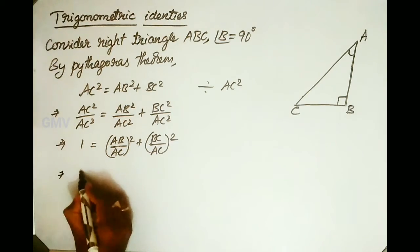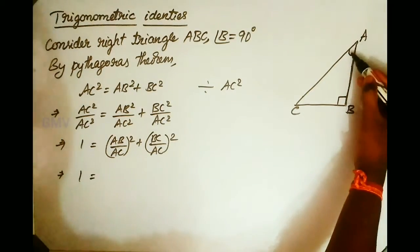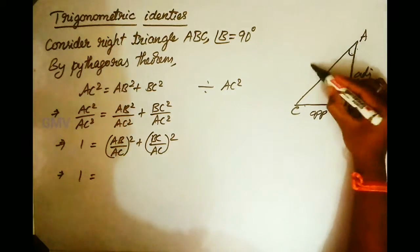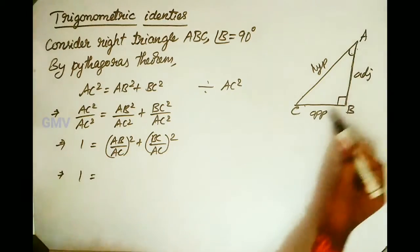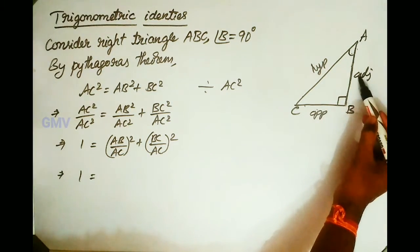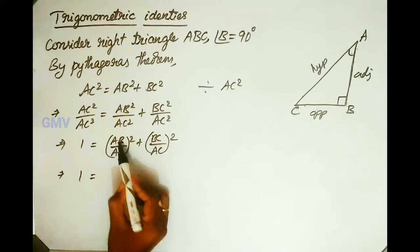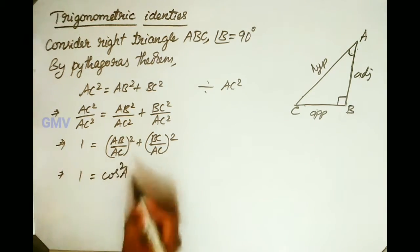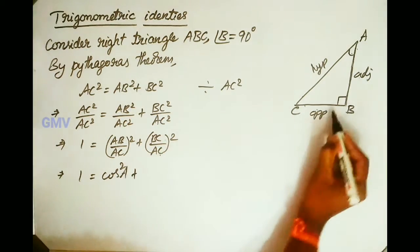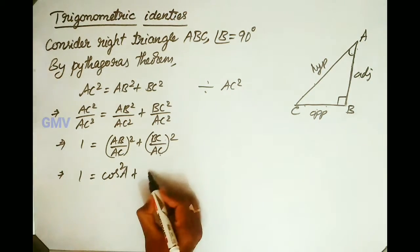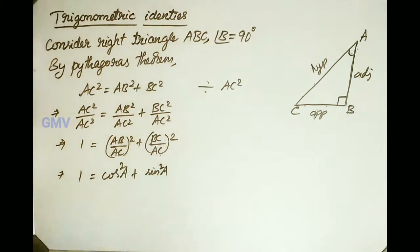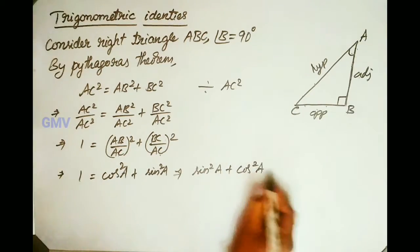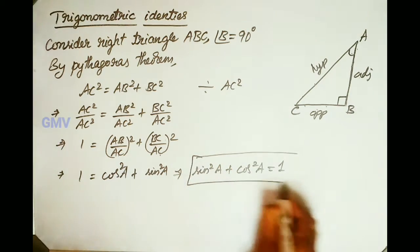In the next step, since AC is the hypotenuse, BC is the opposite side and AB is the adjacent side with respect to angle A. So AB/AC is adjacent over hypotenuse, which is cos A. And BC/AC is opposite over hypotenuse, which is sin A. Therefore we get sin²A + cos²A = 1. This is the first trigonometric identity.